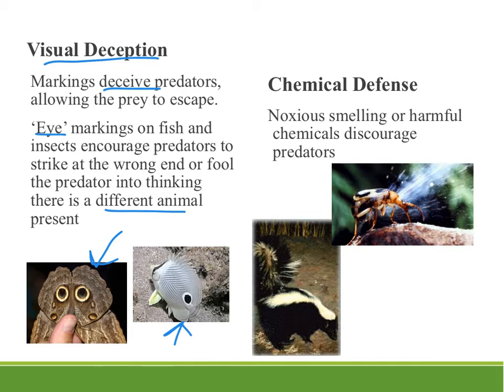Another type of prey defense is to have something chemical — something that smells horrible or can be harmful to the predator. We're familiar with the skunk with its very awful smell, and then there's the bombardier beetle who actually puts out acid in defense.